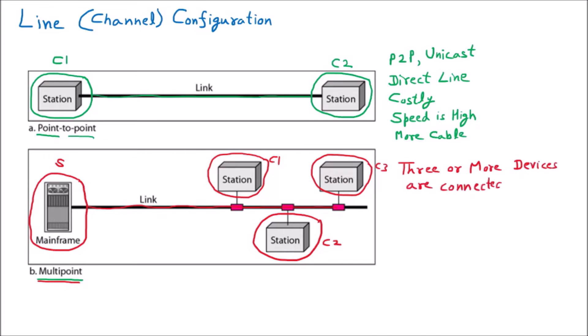Why three or more devices? Because in point-to-point there were already two devices, so at least three are needed for multi-point. In this example, four devices are connected to a single channel. When the server sends data, it goes to C1, C2, and C3 — the data goes in all directions. That is multi-point.